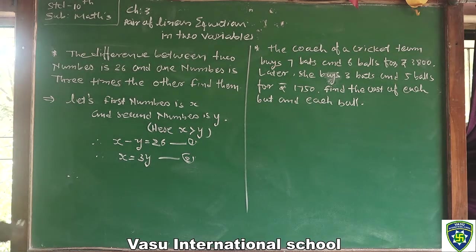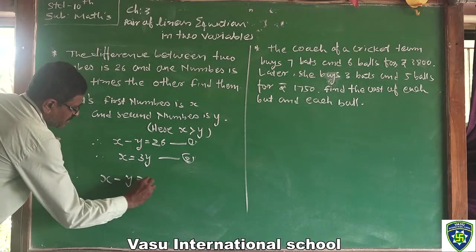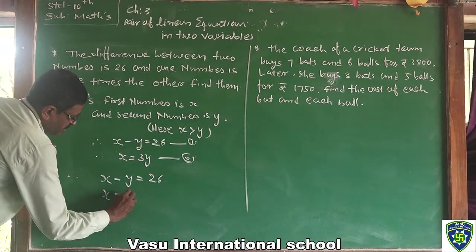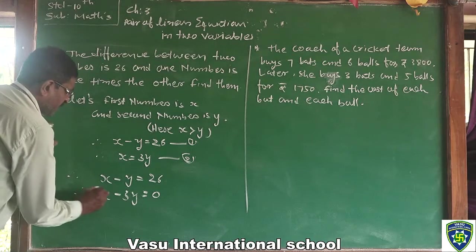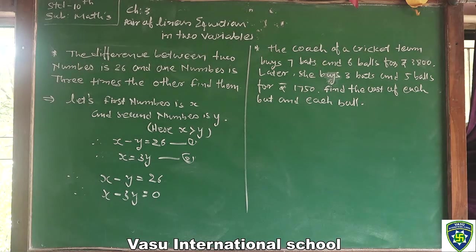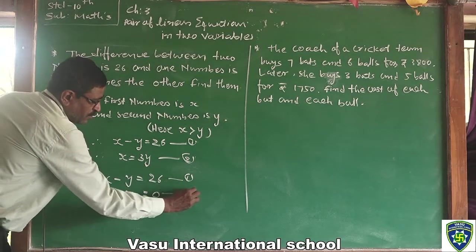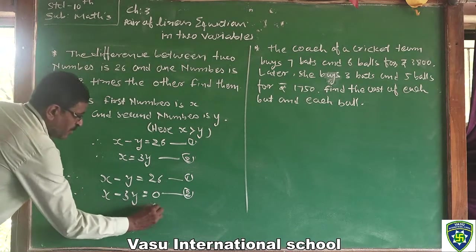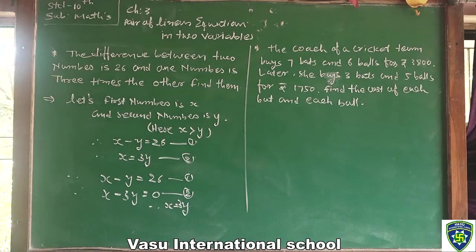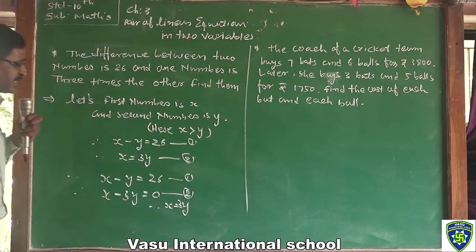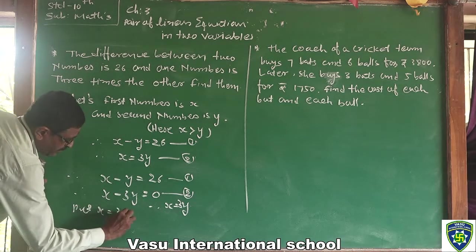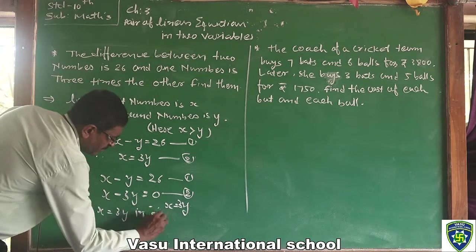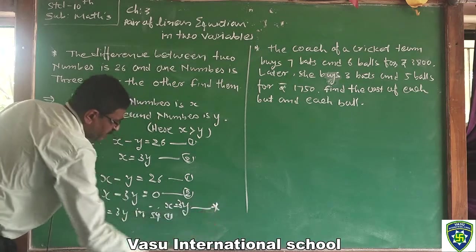In linear general form, Equation 1 is: x minus y equals 26, and Equation 2 is: x minus 3y equals 0. Now we use the substitution method. From Equation 2, x is equal to 3y. Substitute the value x equals 3y into Equation 1.